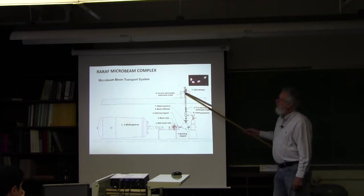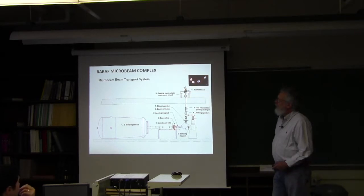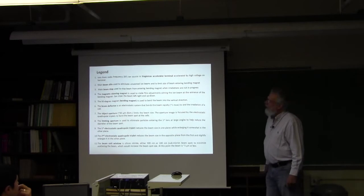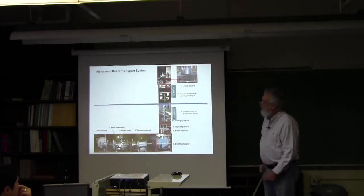Through the 27 inch concrete floor, the second triplet is here and the end station with its exit window is there, and that's where the irradiation takes place.